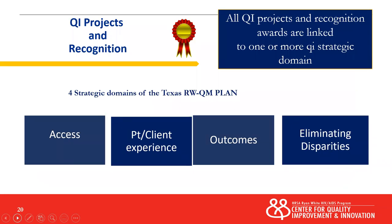All of our QI projects and activities always are linked to one of four strategic domains: access to care, experience of the client, improving health outcomes, and eliminating disparities. The only way clients are going to come back is if they have a good experience — they deserve respect. Pay attention to your surveys and listen to your customers. Everything we do in Texas has to be linked to one of those domains to be approved for a quality improvement project.